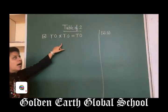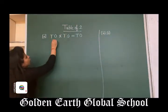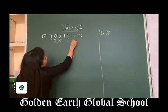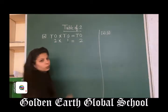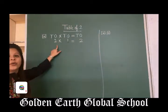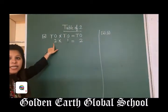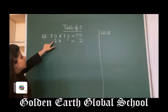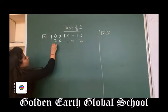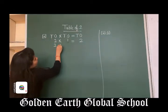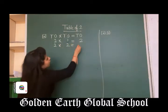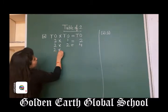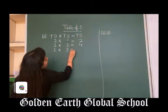Now we will start table of 2. 2, 2 ones are 2. You have to write a single digit — 2 is a single digit. You have to write the single digit under 1s. Clear? 2, 2 twos are 4.